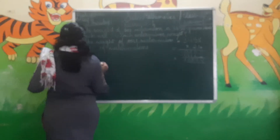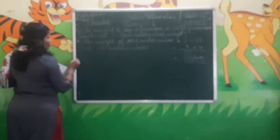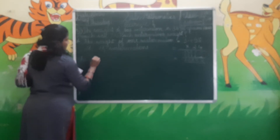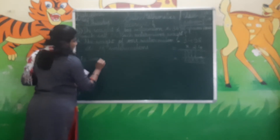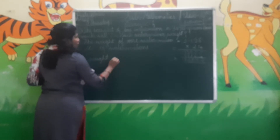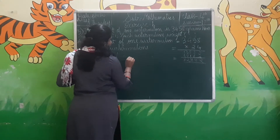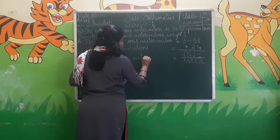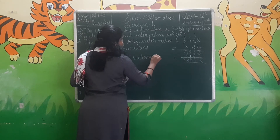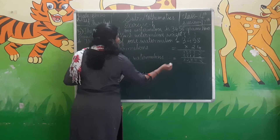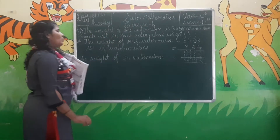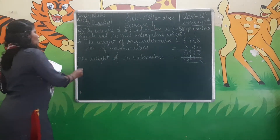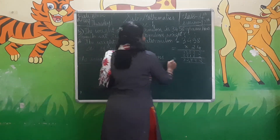So for this, the weight of 24 watermelons is 82,992 grams. What is the weight of 24 watermelons? That is 82,992.